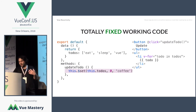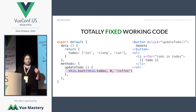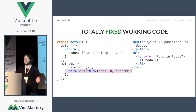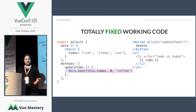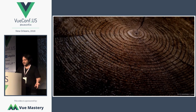So if we want to fix the code — there's more about this in the docs — basically use these set methods. That tells Vue to update the index and also trigger the reactivity system.